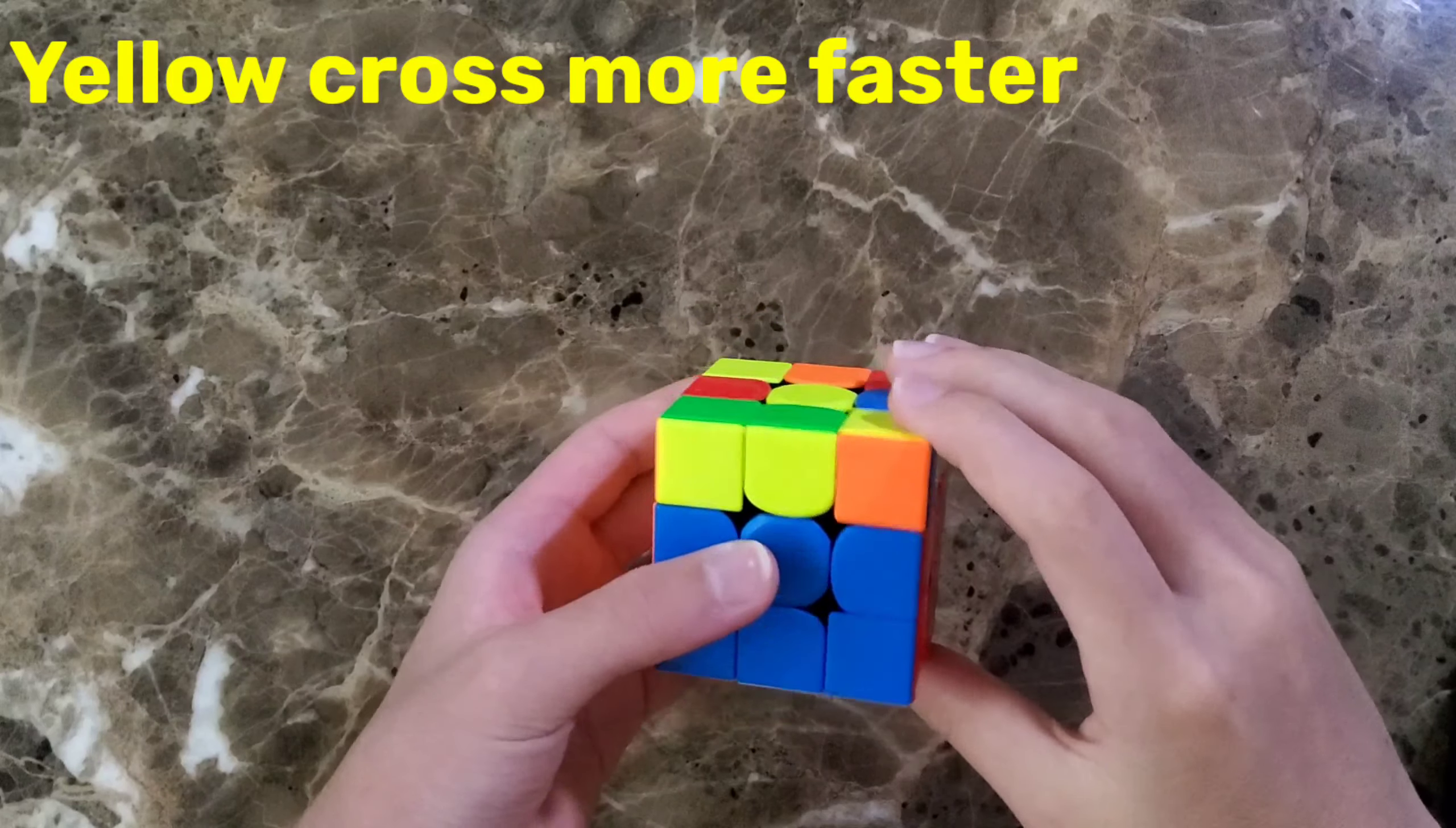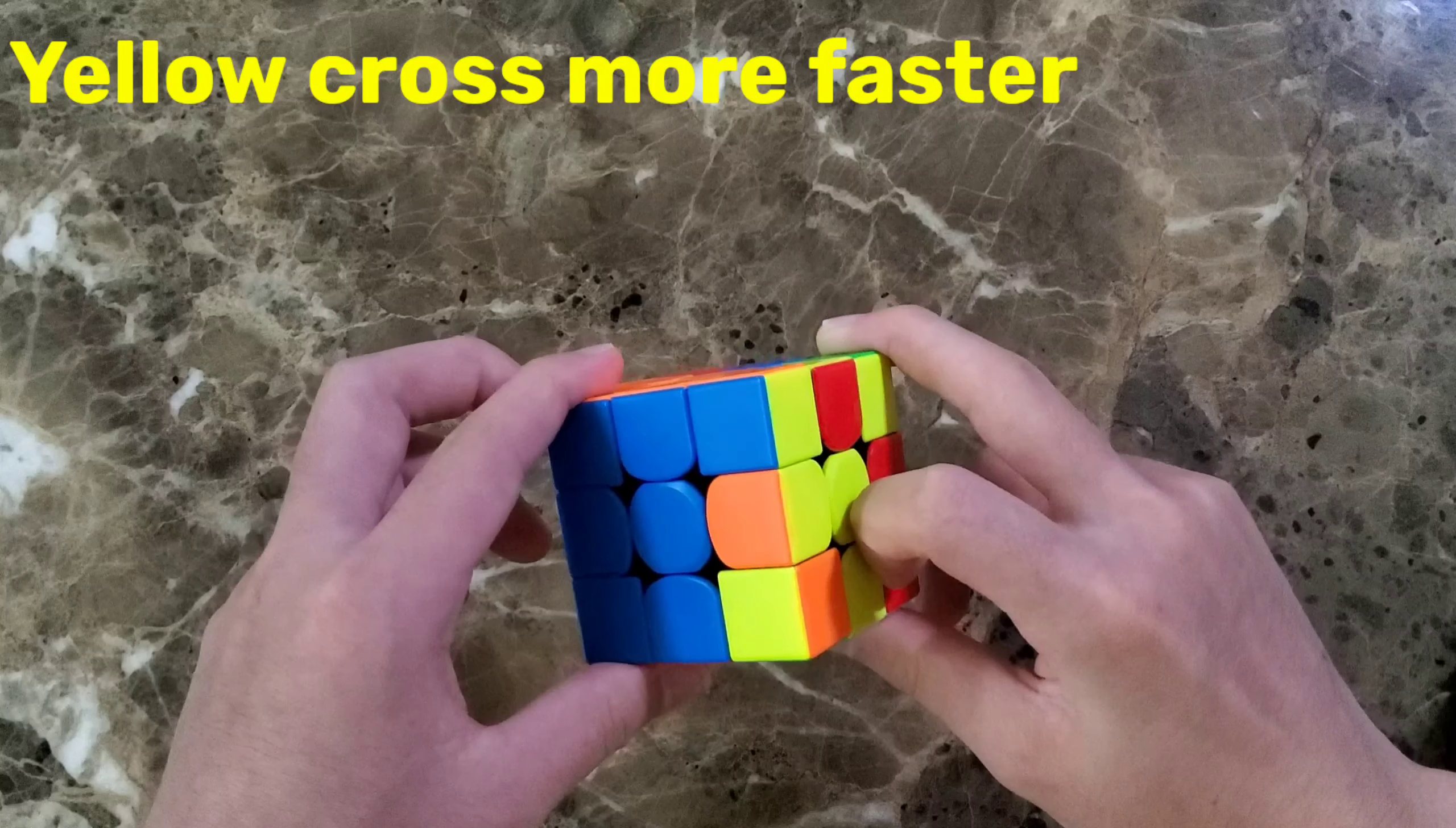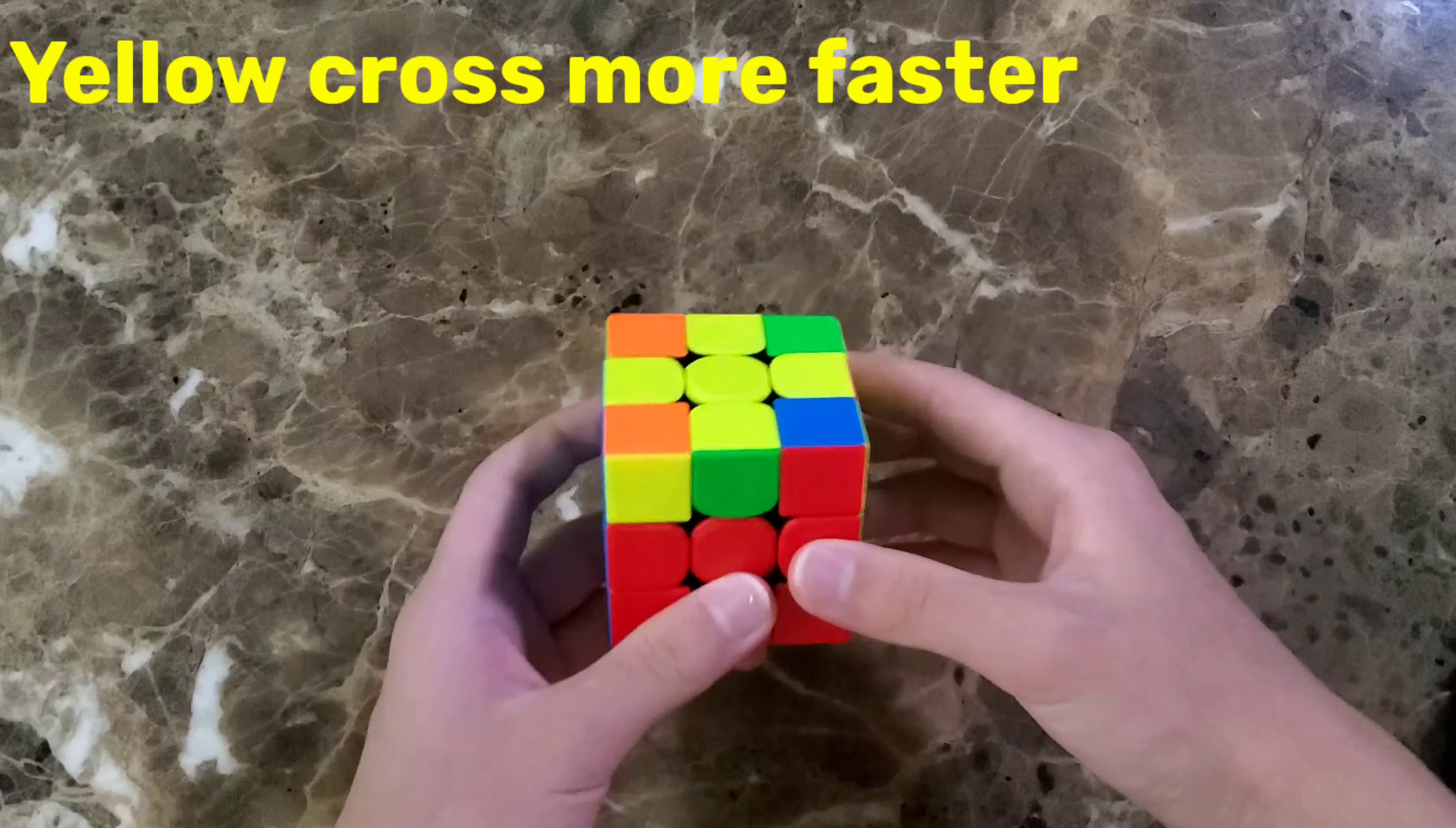If you want to do that faster, do the same thing, but don't turn the front face. Like this. And then you turn the middle low, like this. And then twist. And then turn the two things again. That makes it faster.